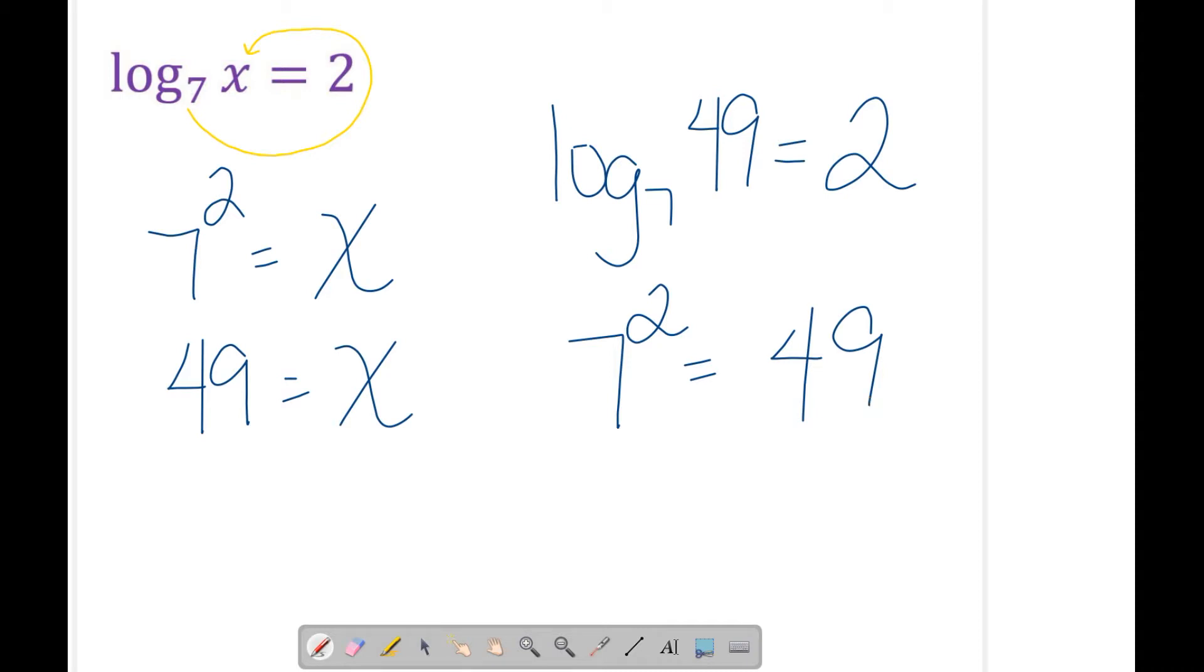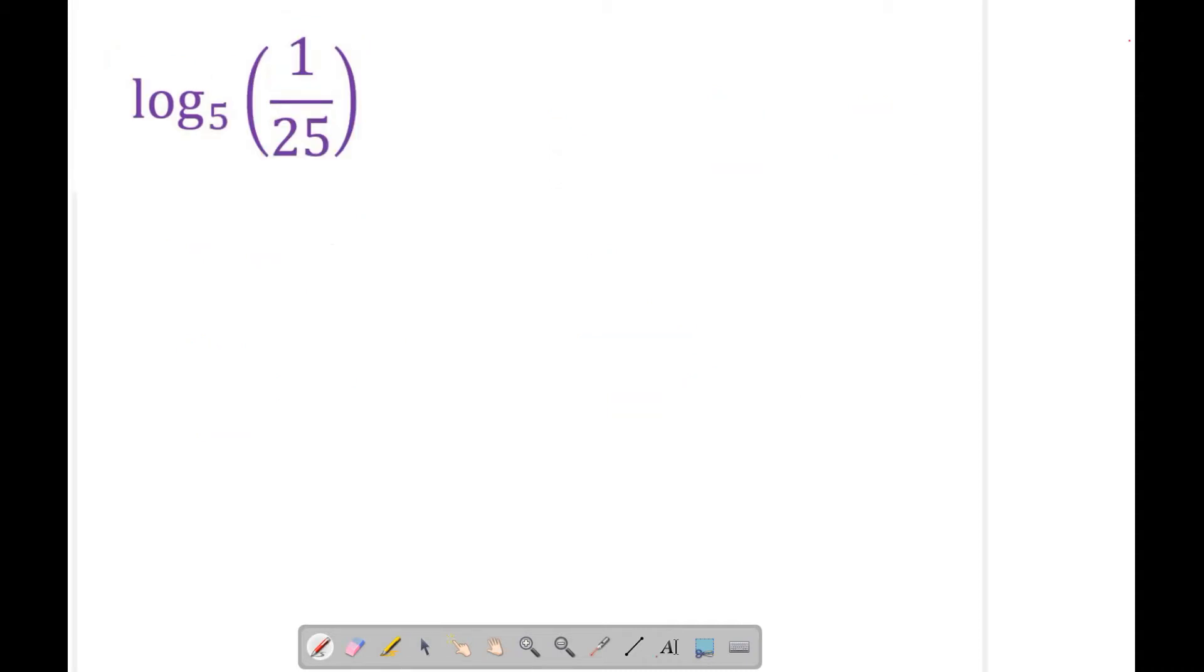Now let's look at one that's a little bit different and causes grief for maybe a different reason. This one says log base 5 of 1/25. There is no variable, and they might just say evaluate or simplify because they want to know, do you understand that this is simply asking 5 to what power is 1 over 25? A lot of times they will not give you a variable. Let's first add a variable. Let's say that this equals y.